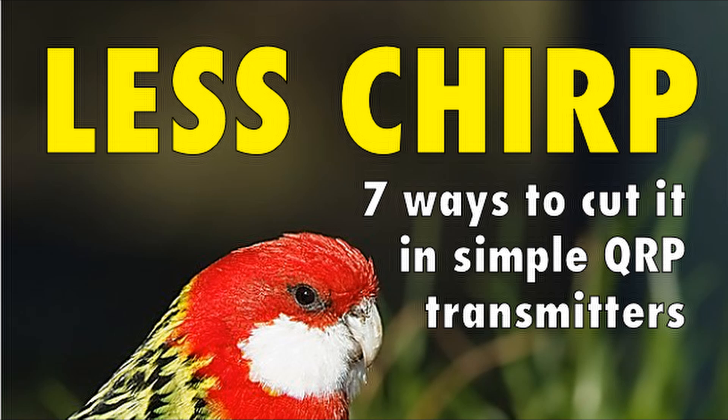Rough rule of thumb is the fewer the stages there are in a transmitter, the more it's prone to chirp. Whereas the opposite, the more isolation between an oscillator and antenna, the less chirp there is. Basically the simpler the transmitter, the fewer stages between oscillator and antenna, the more prone it is to chirp. Conversely if there are more stages, there's better isolation and much less likelihood of chirping.